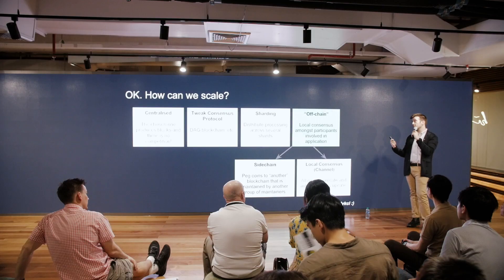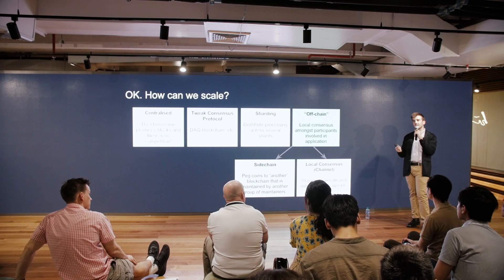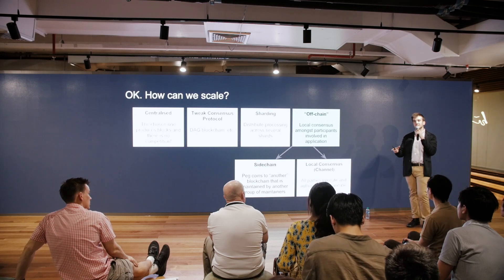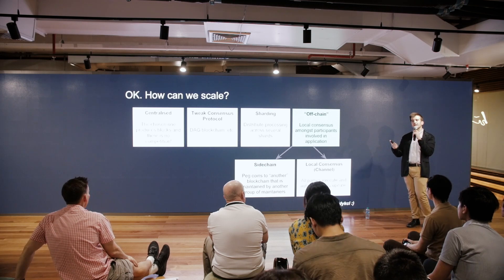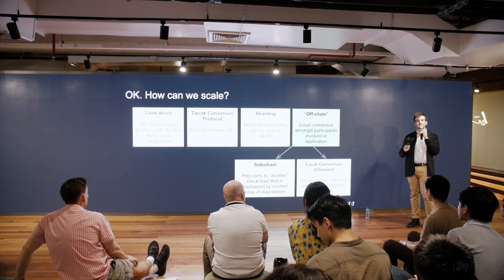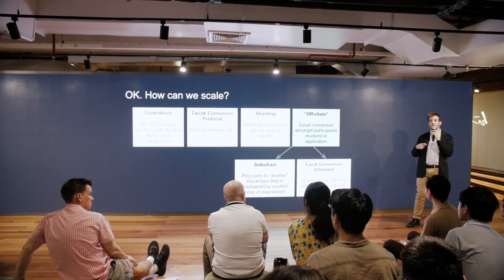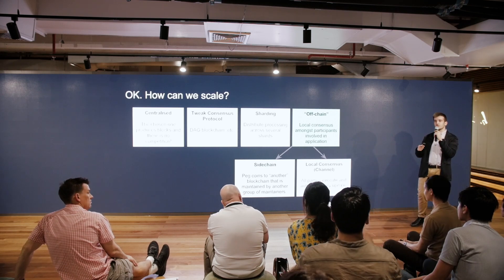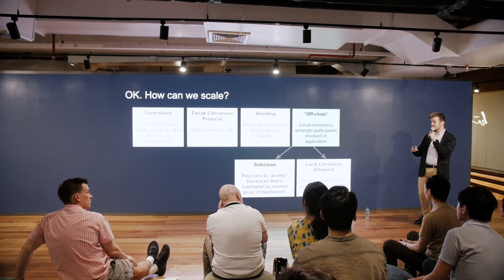Then we can go to off-chain, which is what we love to talk about. Off-chain means instead of having the whole validator set of layer one validating the whole state, we have local consensus — everyone in the sidechain or off-chain environment speaks only with those participants and agrees on whatever they need to agree on.